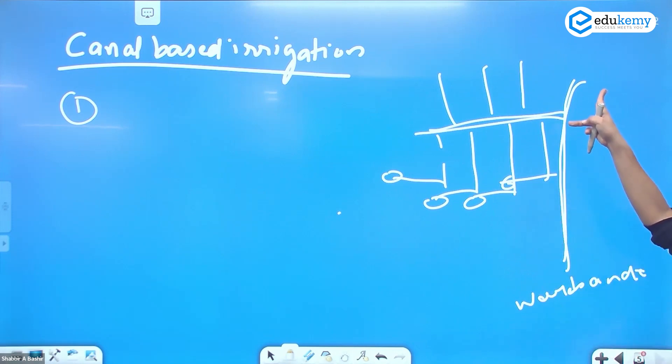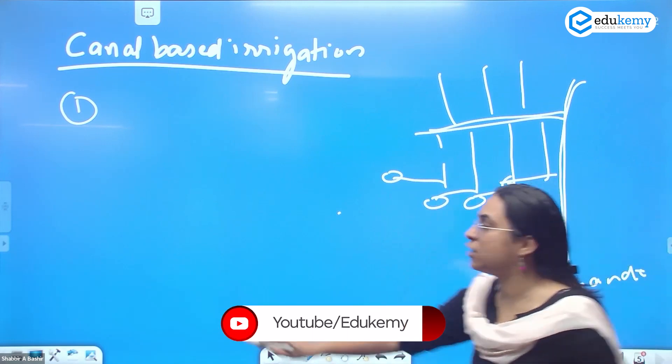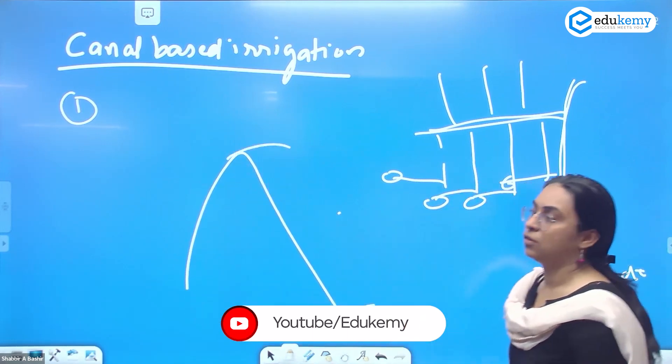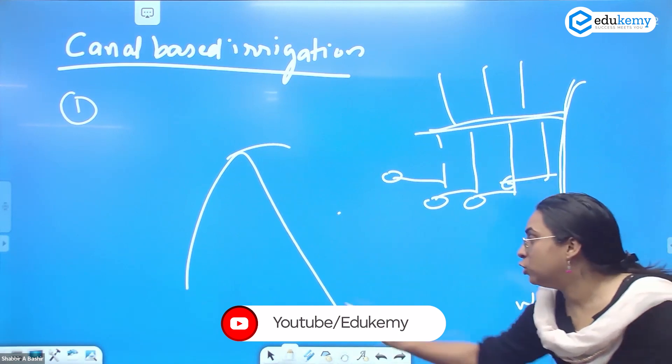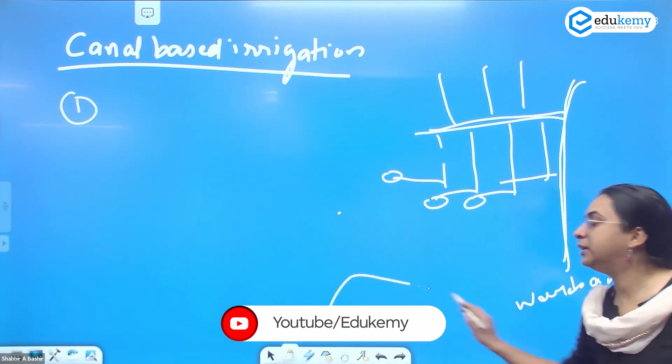Canal-based irrigation can be done where there is a perennial source of river. Second, you have to dig the canal, so you need to have soft soil. Thirdly, because you have to dig the canal, you need to have low relief. Relief is variation in the height. So there should be low relief for us to dig the canal easily.